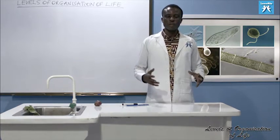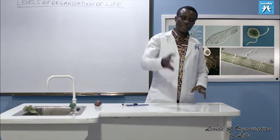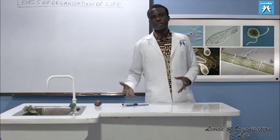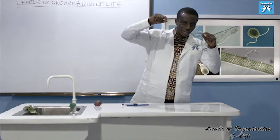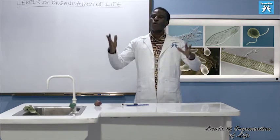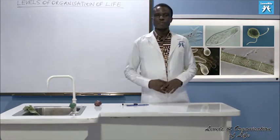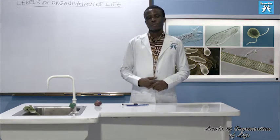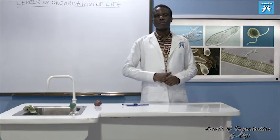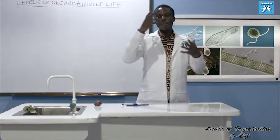We are almost done with our level of organization of life. The basic structural and functional unit of life is the cell — the smallest unit of that thing you refer to as life. In some organisms, only one cell forms the organism, while in some the organism is made up of more than one cell. We looked at the structure of the cell, the organelles, and specialized cells in organisms made up of more than one cell.